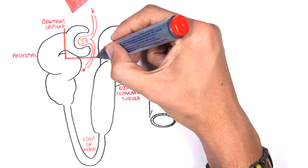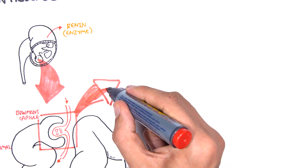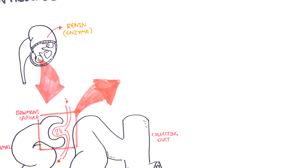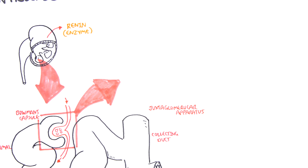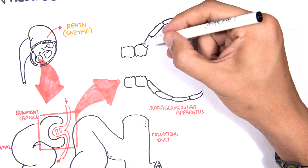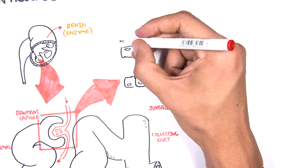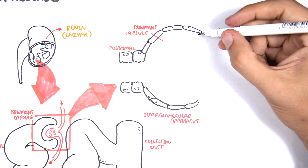This section is where we can find cells that produce renin. Let's zoom into this section and understand the structures and cells found in this area. This area is known as the juxtaglomerular apparatus, and it consists of the head of the nephron with the Bowman's capsule. The proximal convoluted tubules are made up of more cuboidal-like cells, whereas the head of the nephron has squamous, thin cells.